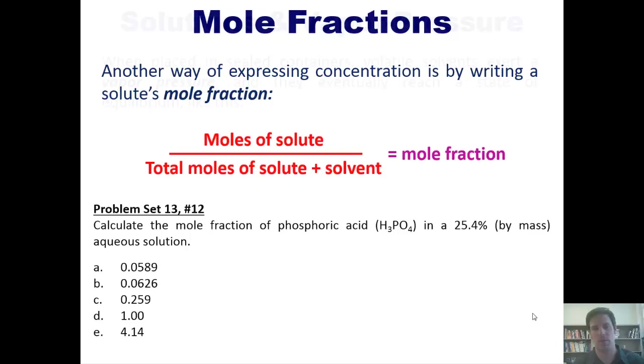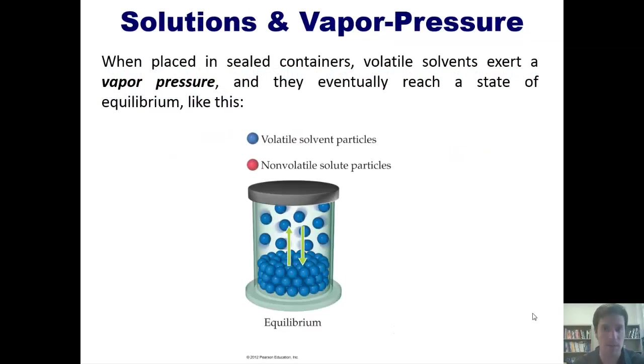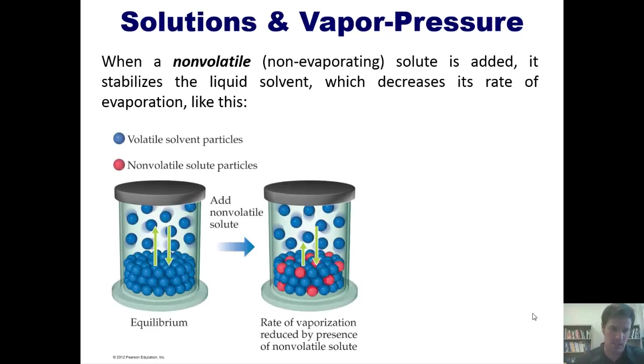We now move to a different subject, solutions and vapor pressure. When placed in sealed containers like this one, volatile solvents exert a vapor pressure and they eventually reach a state of equilibrium like this. I talked about something like this in an earlier video. Now, when a non-volatile, which is a non-evaporating solute, is added, it stabilizes the liquid solvent, which decreases its rate of evaporation like this.